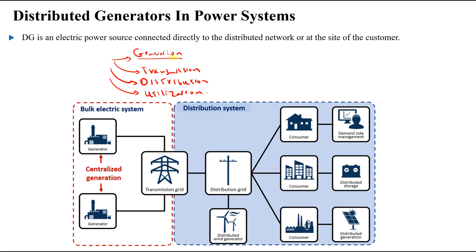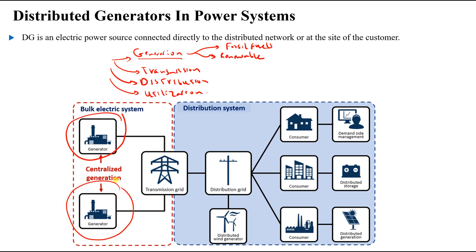In the generation stage, we generate electrical energy from several resources — it can be renewable or non-renewable. Non-renewable includes fossil fuels; renewable includes wind, solar, and other renewable resources. As you can see in this figure, we have centralized generation — large power plants in gigawatts that provide electrical power to the power system.